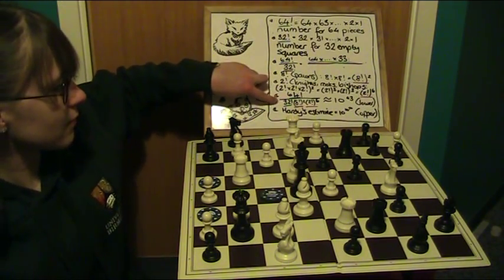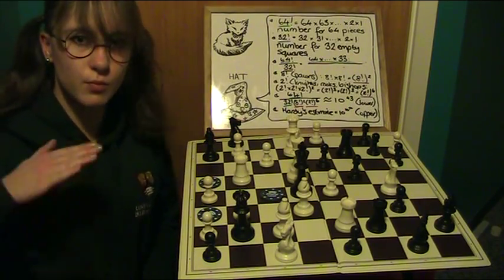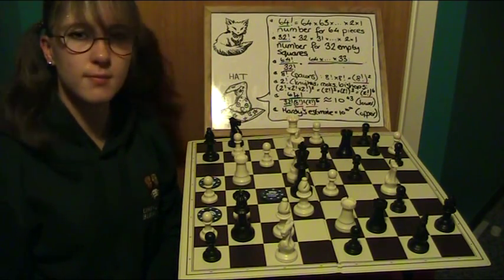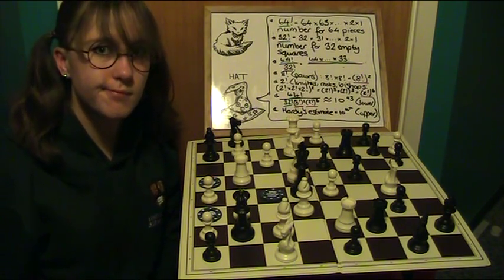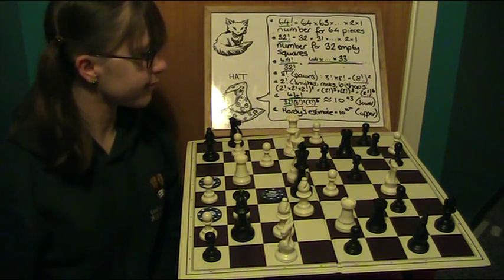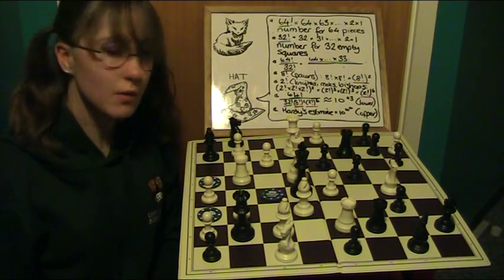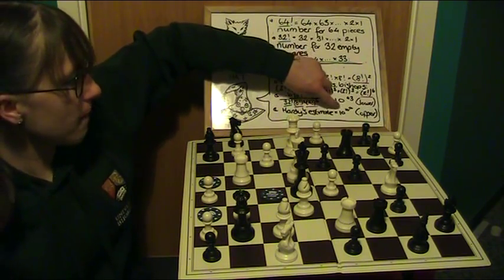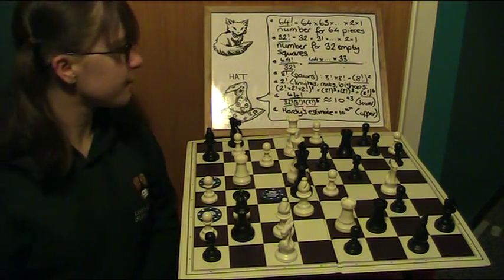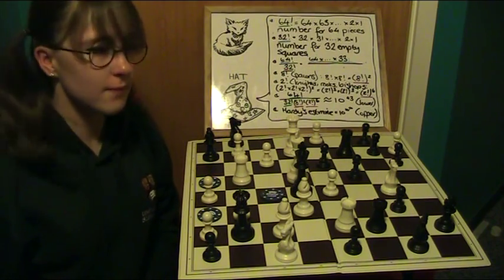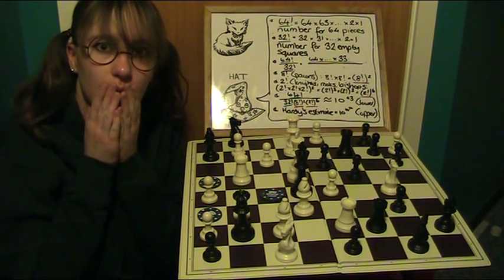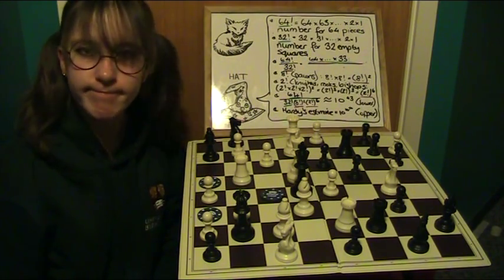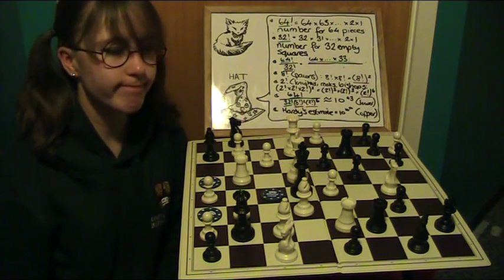This gives us a lower bound, a minimum value of roughly 10 to the power of 43. Now this is still a very large number as we saw earlier on in the video. And it has been proven that an upper bound exists. We call it Hardy's estimate which is 10 raised to the power of 10 to the power of 50. Or rather 10 to the power of 10 with 50 zeros after it. This is an immense upper bound. And so we don't even consider it because it is so large that we can't possibly calculate with this.